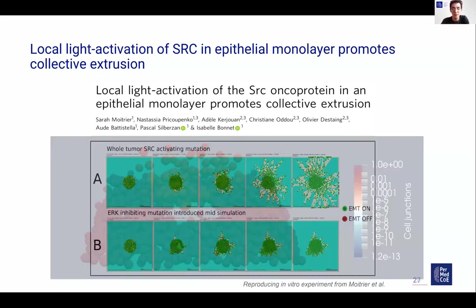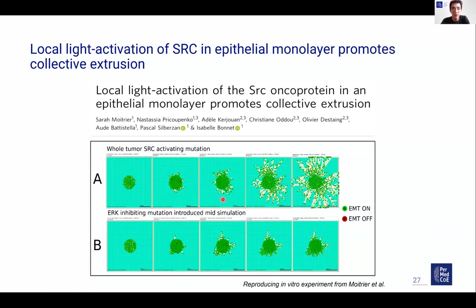We also introduced the same ERK knockout into the SNAI1 experiment to check if we would reproduce the same cell death observed in the ΔNp63 experiment. In panel A, with SNAI1 active for all cells there is extensive invasion. When the ERK inhibiting mutation was introduced mid-simulation, this time the cells — instead of dying — were just frozen. So we stopped the mutation but the tumor was not dying. These are different results from the ΔNp63 experiment, but quite interesting to observe.